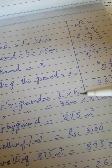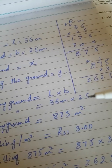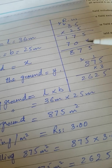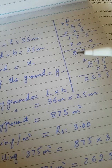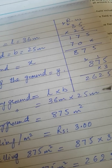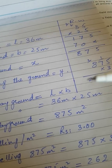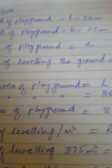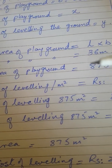Solution: Area of playground equals length multiplied by breadth, which is 36 meters multiplied by 25 meters. By multiplying both you get 875 meter square, since meter multiplied by meter gives meter squared. This is the area of the playground.